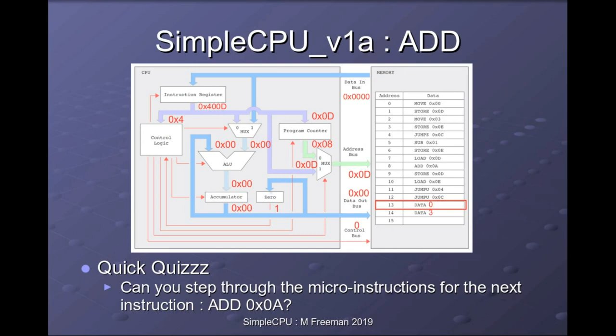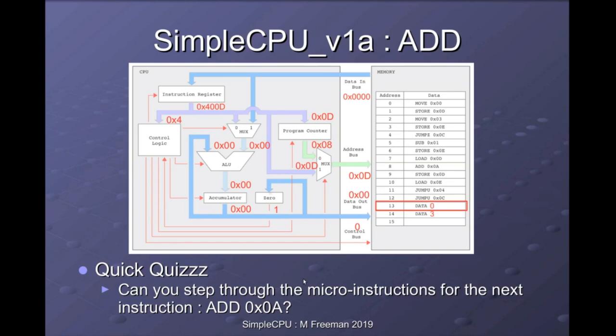Another quick quiz: what happens in the machine when we execute the add instruction — adding 10 to the accumulator? First identify the type: it's an add immediate instruction, so it will be similar to the move instruction but performing an add. You can take this further by also considering the add-from-memory (absolute addressing) instruction, which is not used in this program but is a combination of a load instruction and an add instruction. If you're unsure, go back and look at the CPUSim lab script where we implemented these instructions.